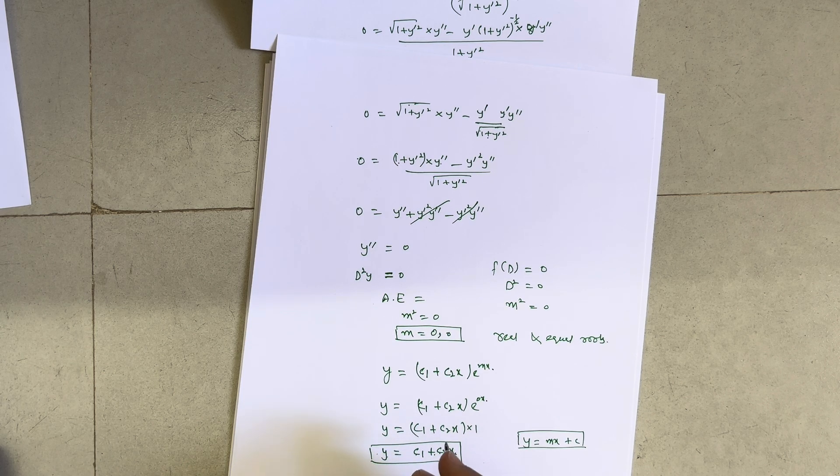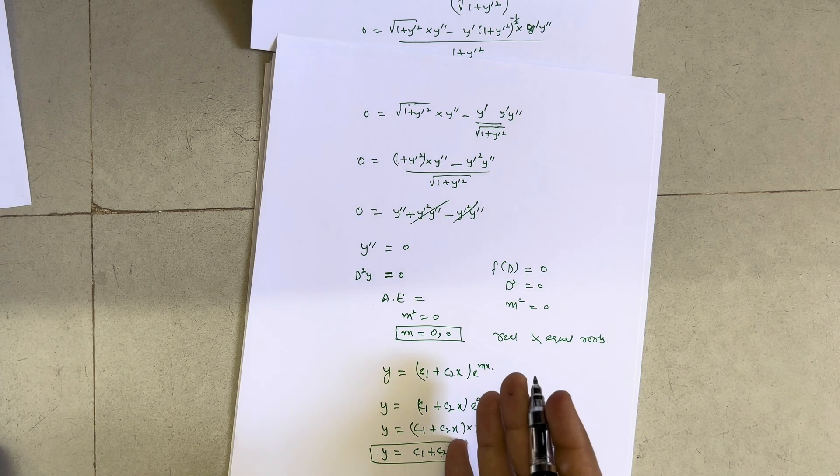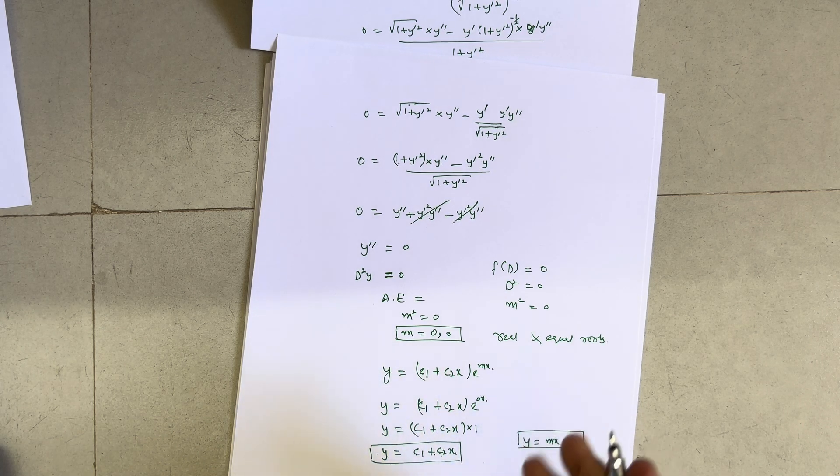We were required to show that the shortest path between two points in a plane is a straight line, and we have obtained exactly the straight line equation y = c1 + c2·x. This completes the proof that the geodesic of a plane surface is a straight line. Please share this with your friends and batchmates. Thank you.